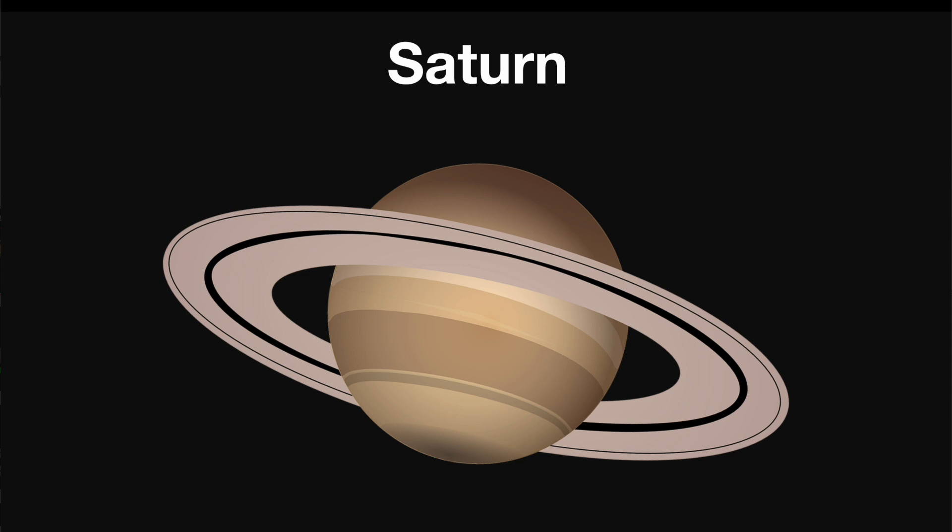Saturn is the sixth planet from the Sun. It's the second largest planet in our solar system and is made of gas. Saturn is known for its encircling rings.